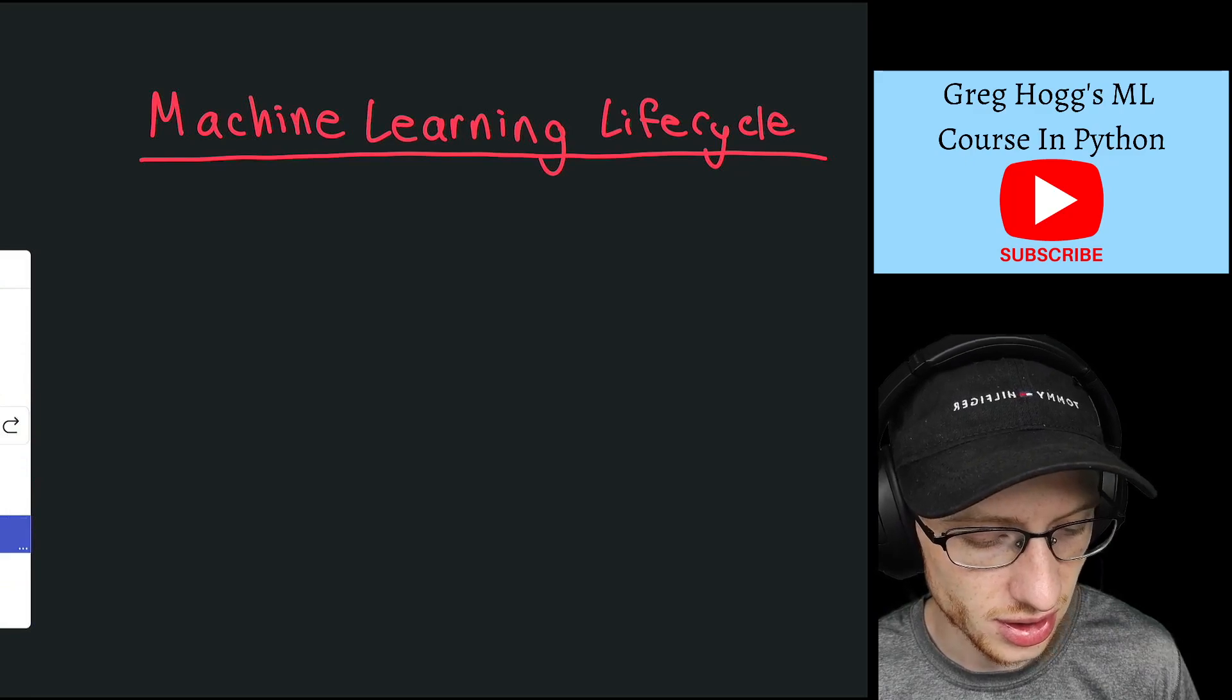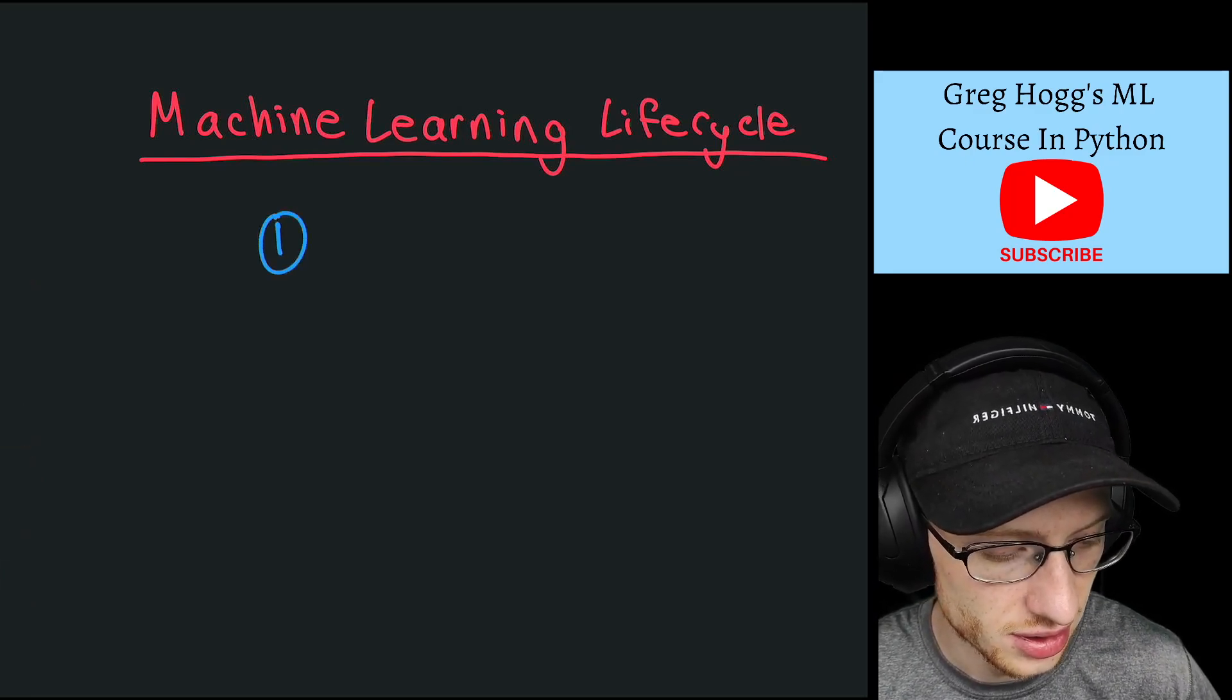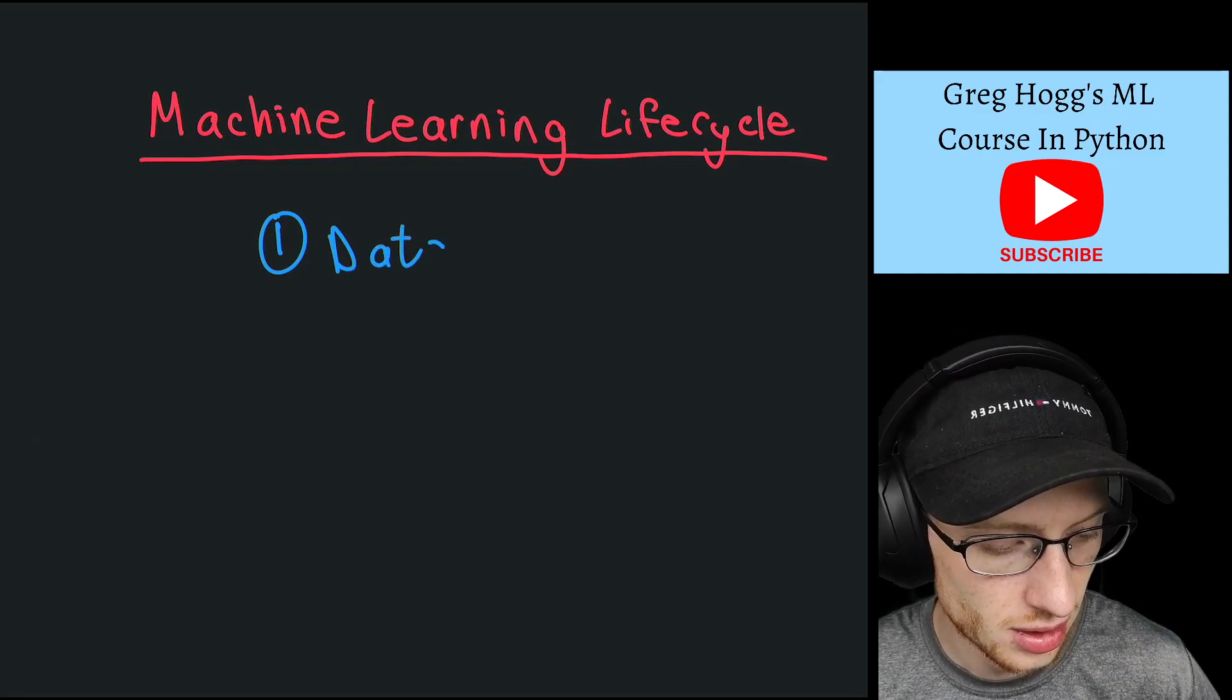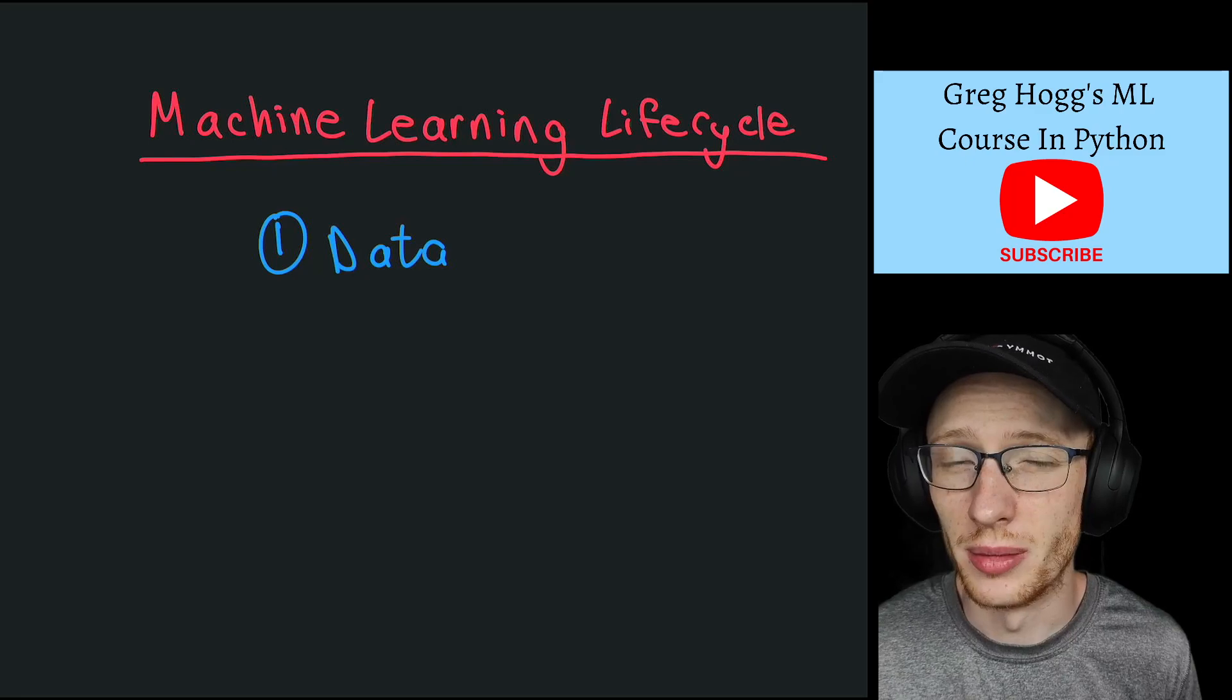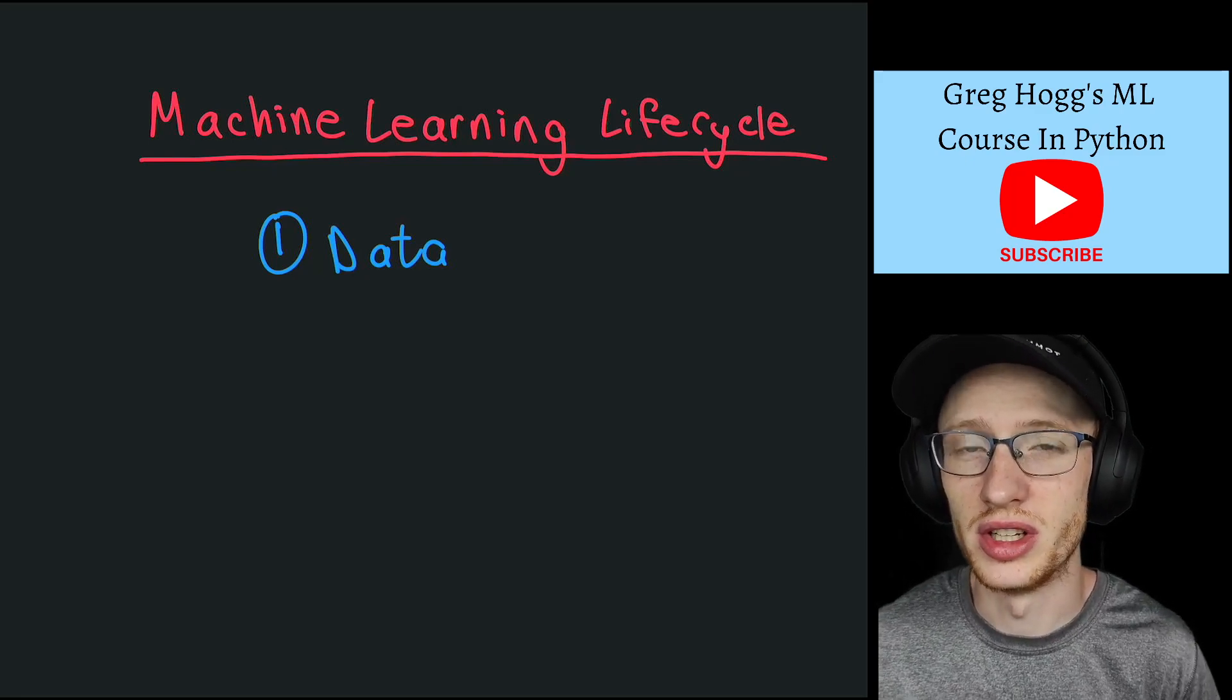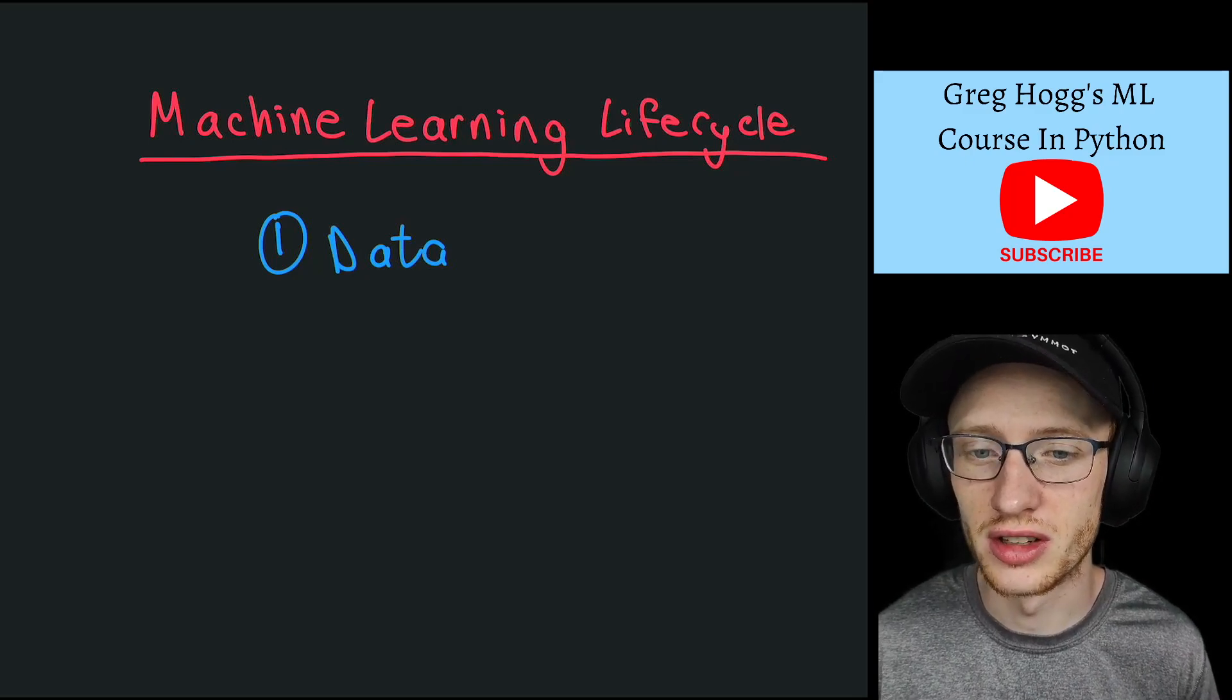Well we basically start with getting data. So one is data. Machine learning algorithms need a lot of data. I could often write big data here because you need a lot of information, and we'll talk about exactly what this data needs to look like later.